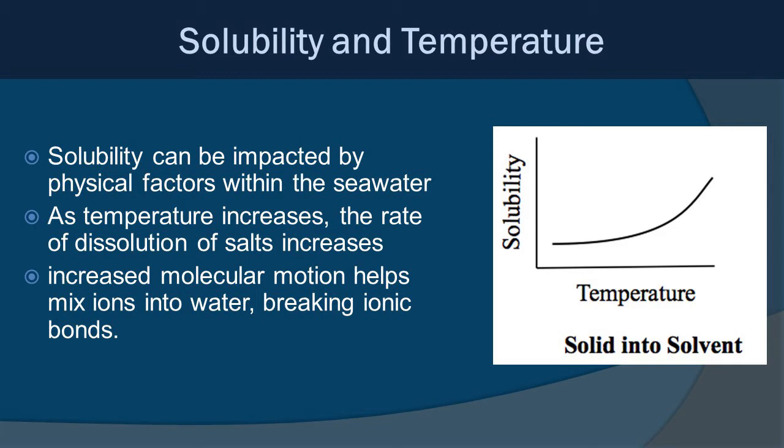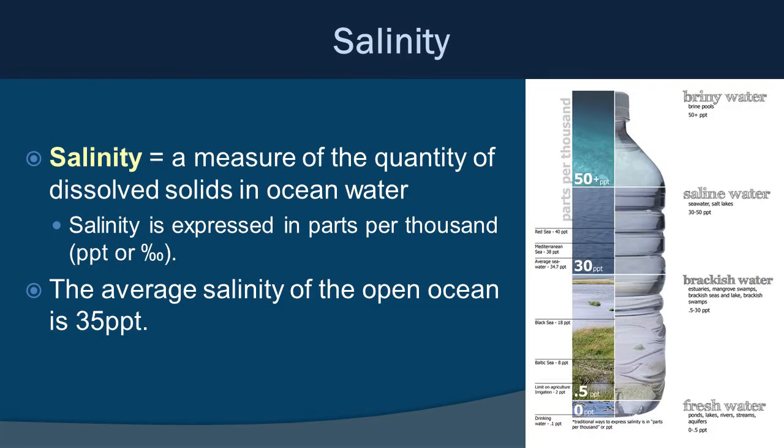Solubility can be impacted by physical factors within seawater. As temperature increases, the rate of dissolution of salts increases. Looking at the graph, as temperature increases along the x-axis, solubility also increases. This increased molecular motion helps mix ions into water, breaking ionic bonds. So now we can define salinity, which is a measure of the quantity of dissolved solids in ocean water.